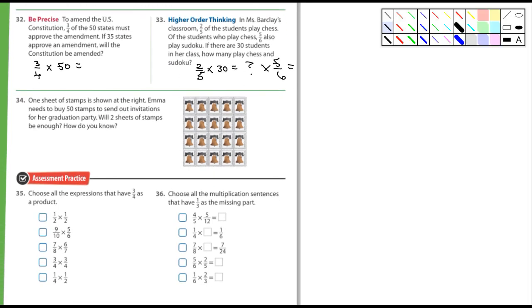Thirty-four. One sheet of stamps is shown at the right. Emma needs to buy fifty stamps to send out invitations for her party. Will two sheets of stamps be enough? How do you know? Well, count them. How many stamps are there? And she needs to buy at least fifty stamps. And if she buys two sheets, will that be enough?